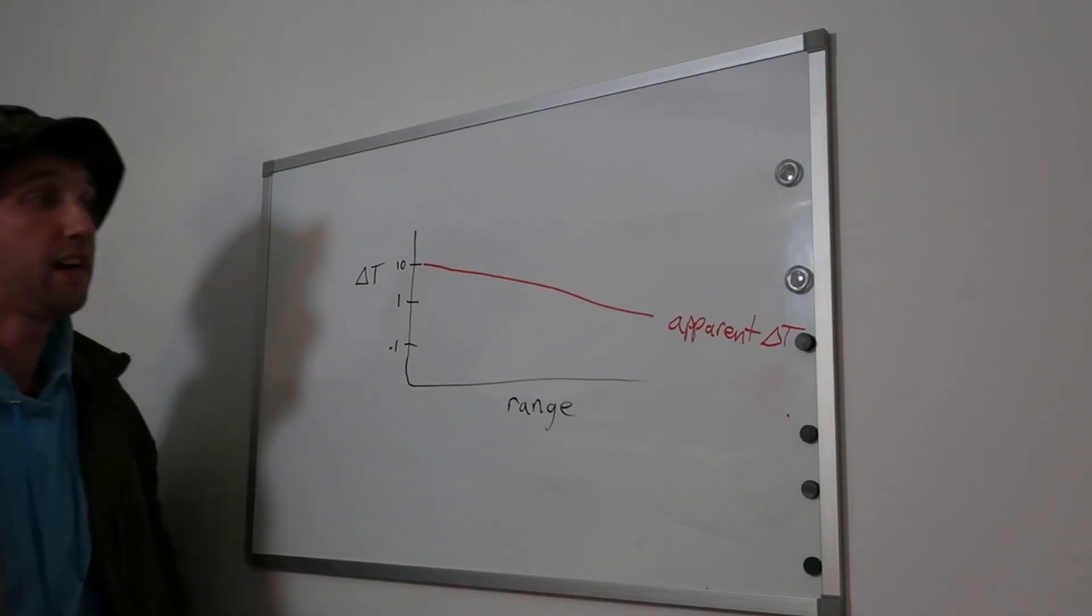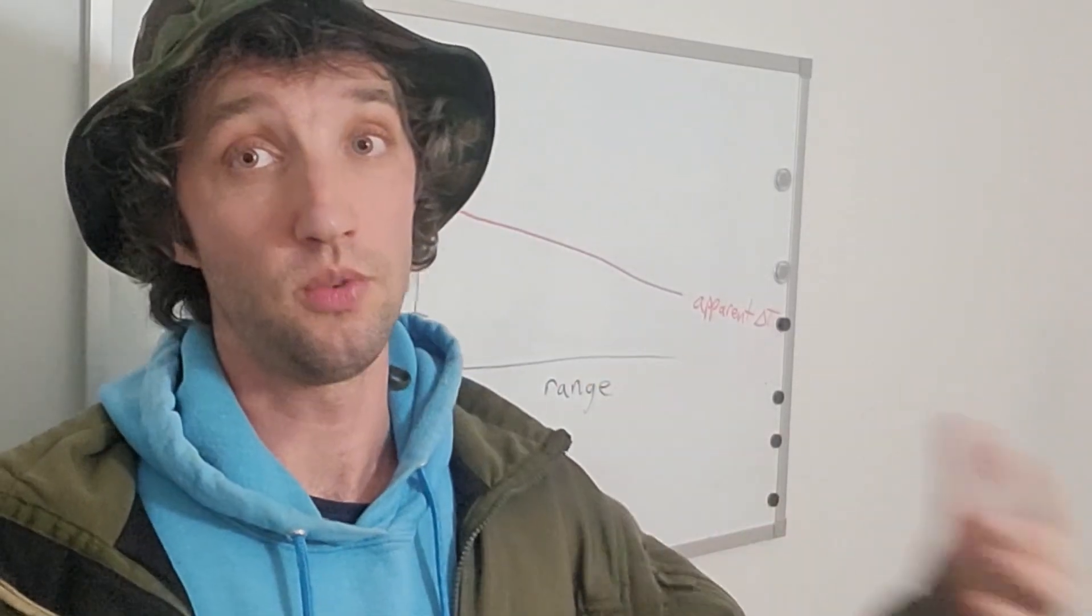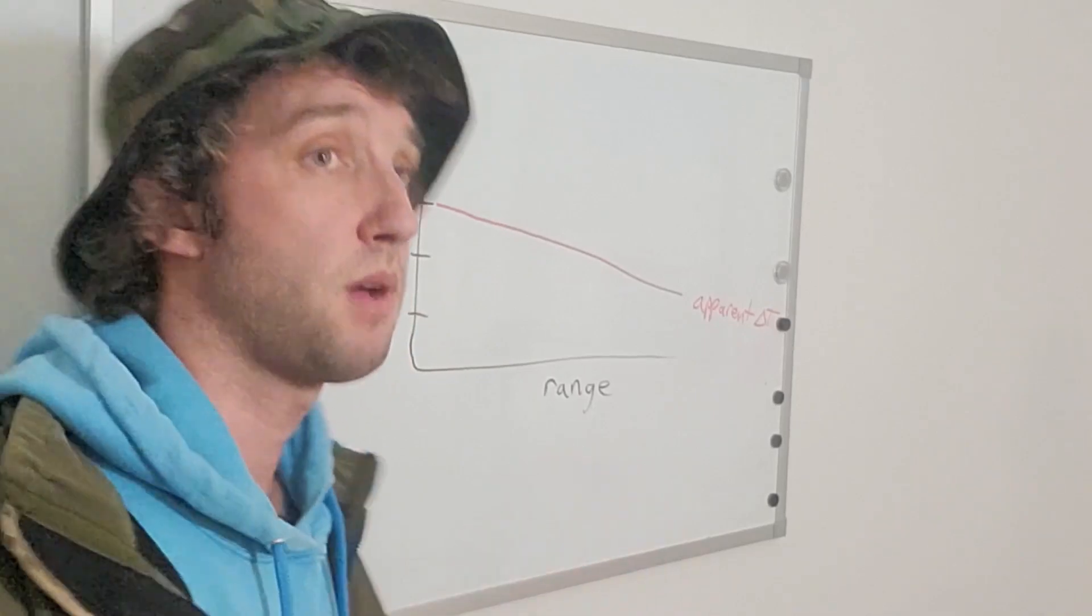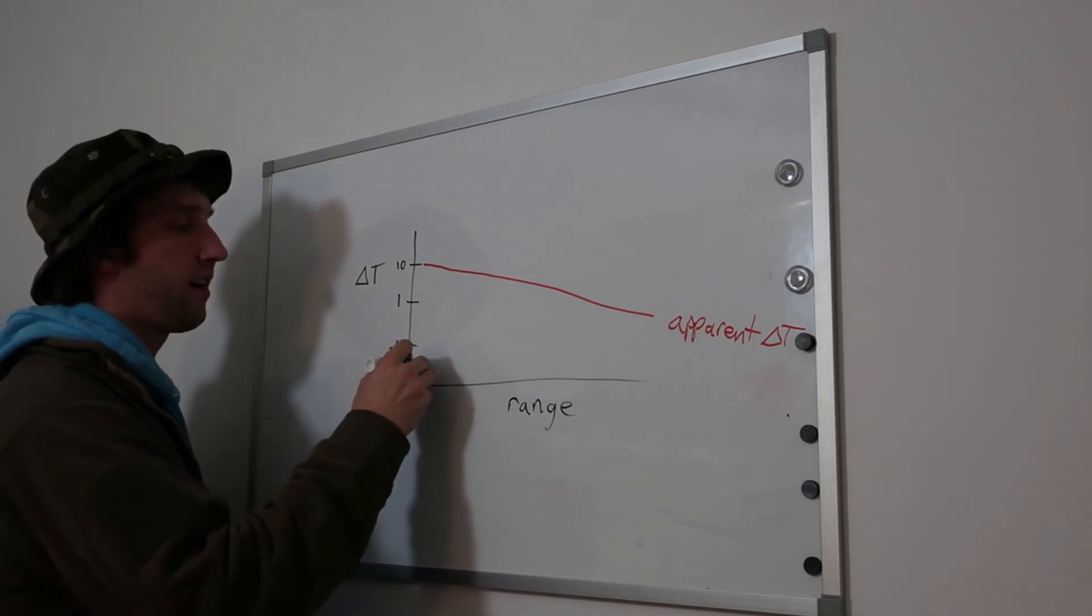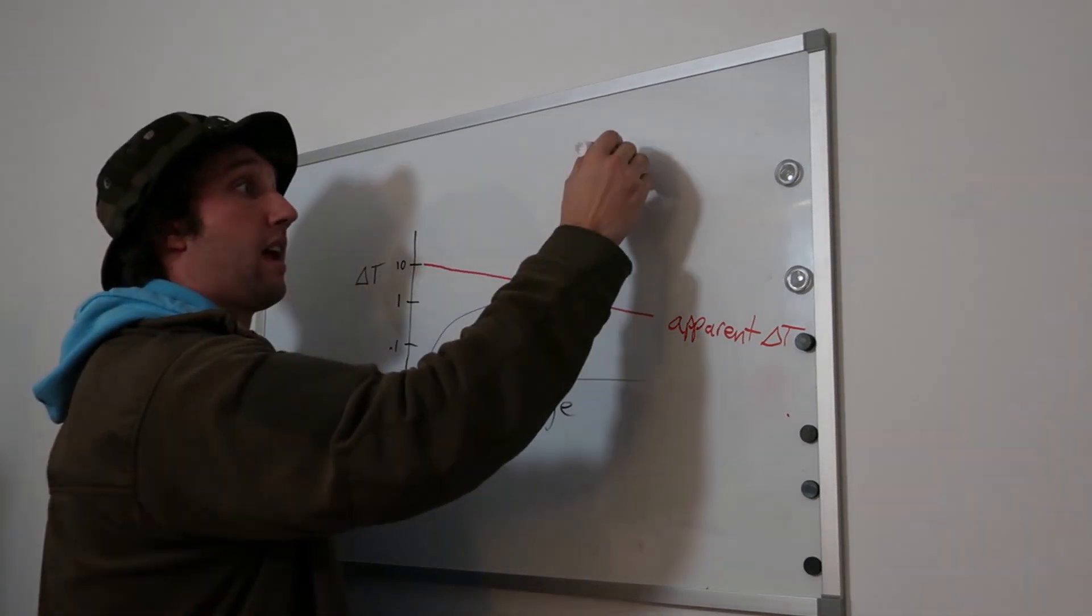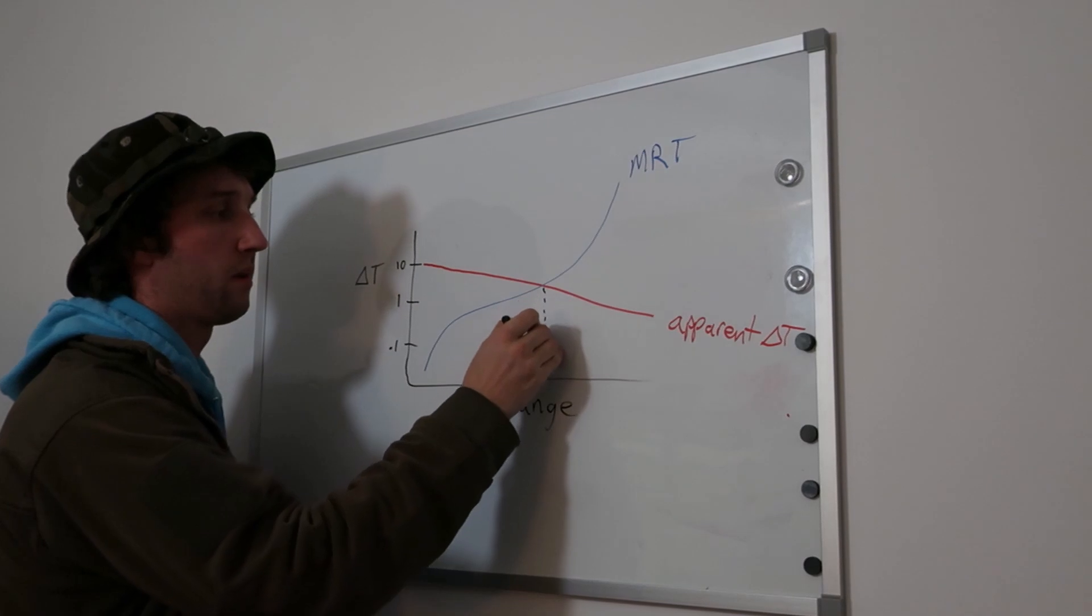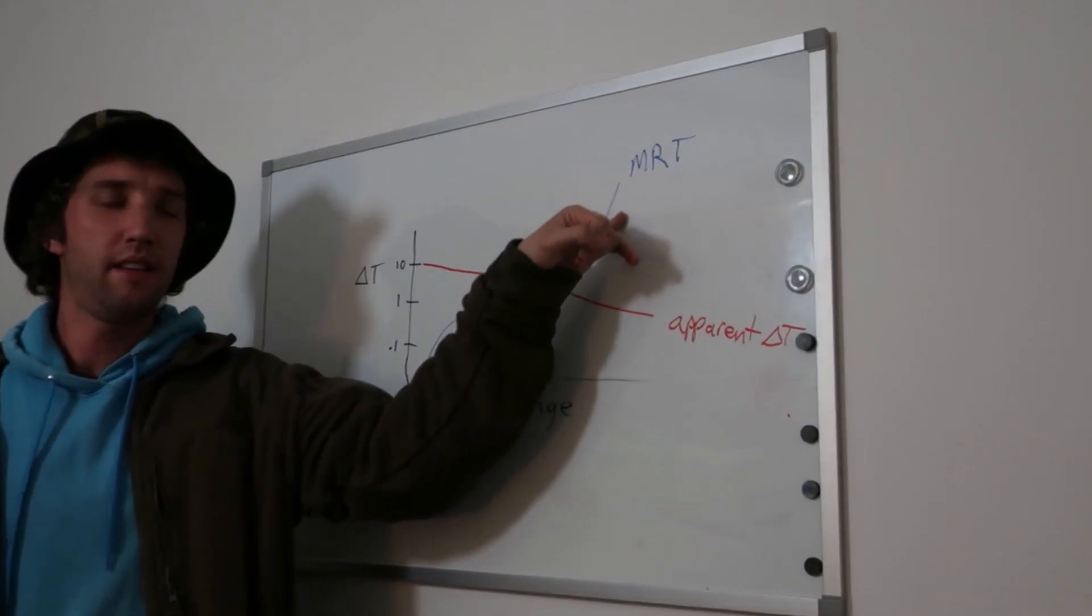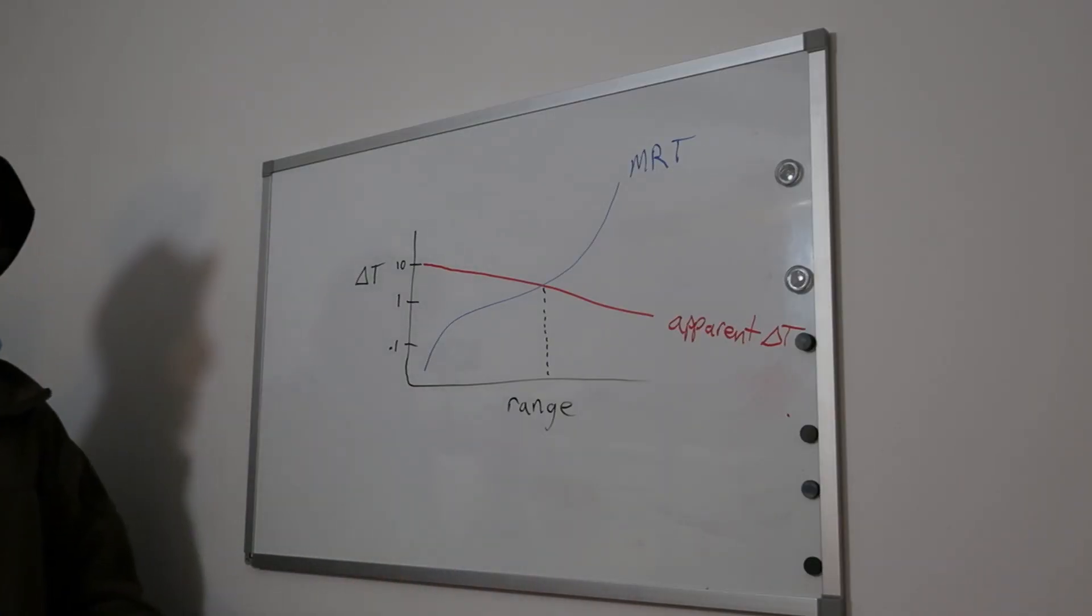Each sensor, in addition to the atmospheric effects, has its limitations on detection range. And that is called the minimum resolvable temperature, MRT, of the sensor. And it usually follows a kind of S-curve like this in the logarithmic scale. This is MRT. And as you can see now, where they cross is your maximum detectable range. How do they define this minimum resolvable temperature? How do they evaluate these sensors?